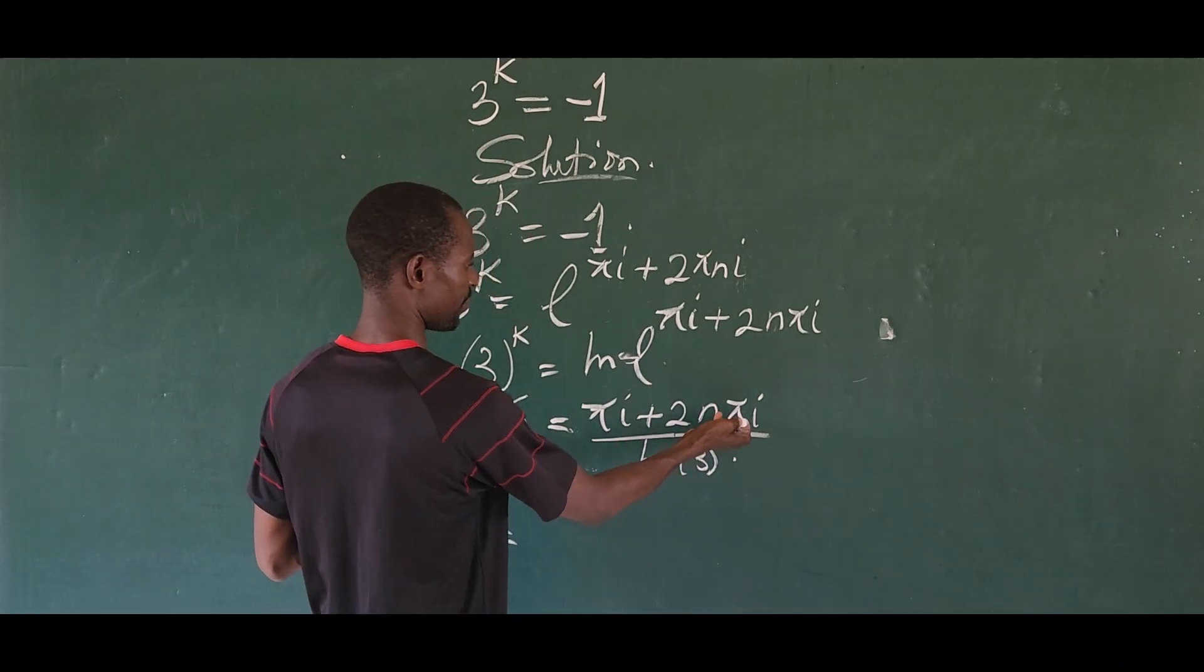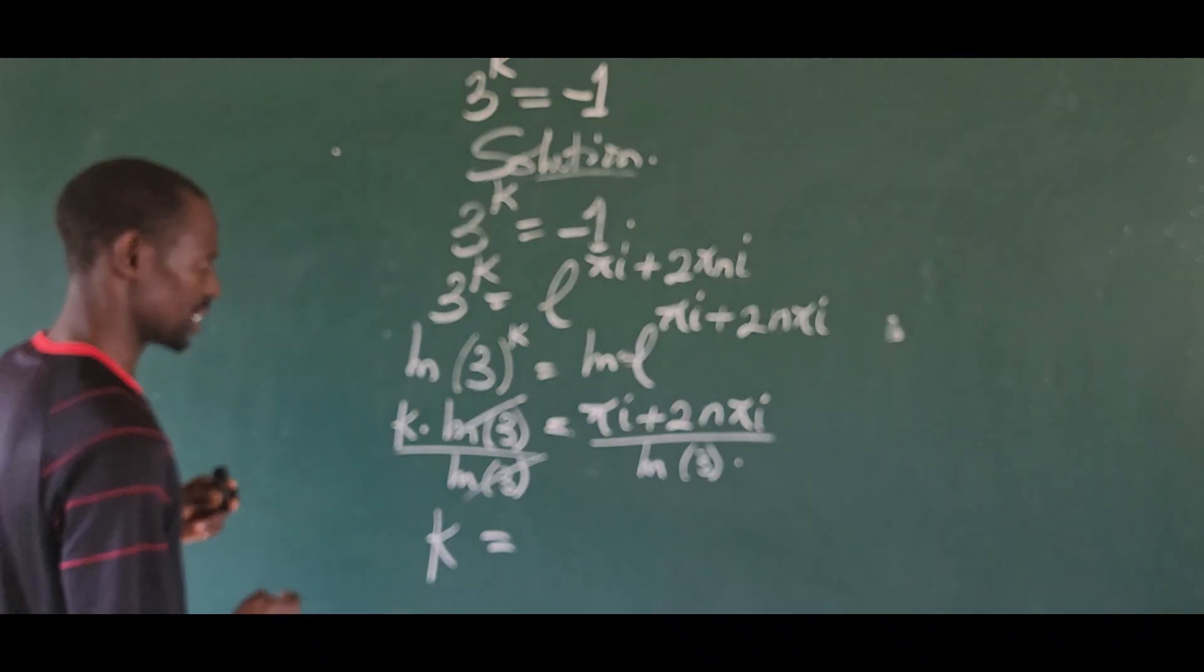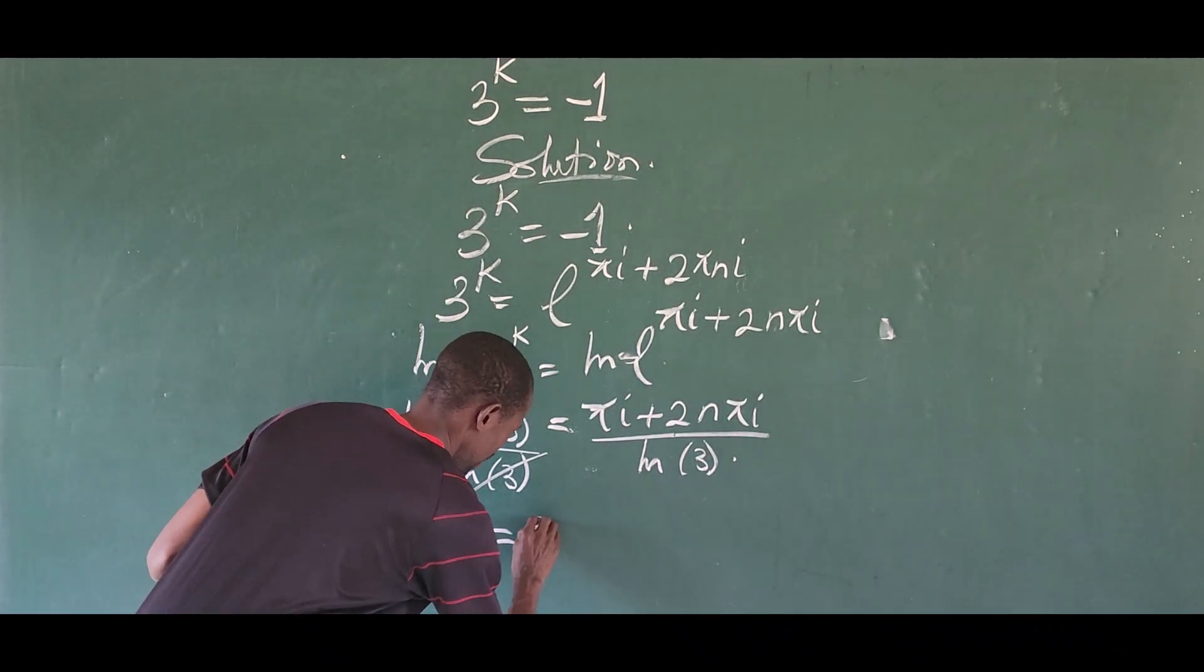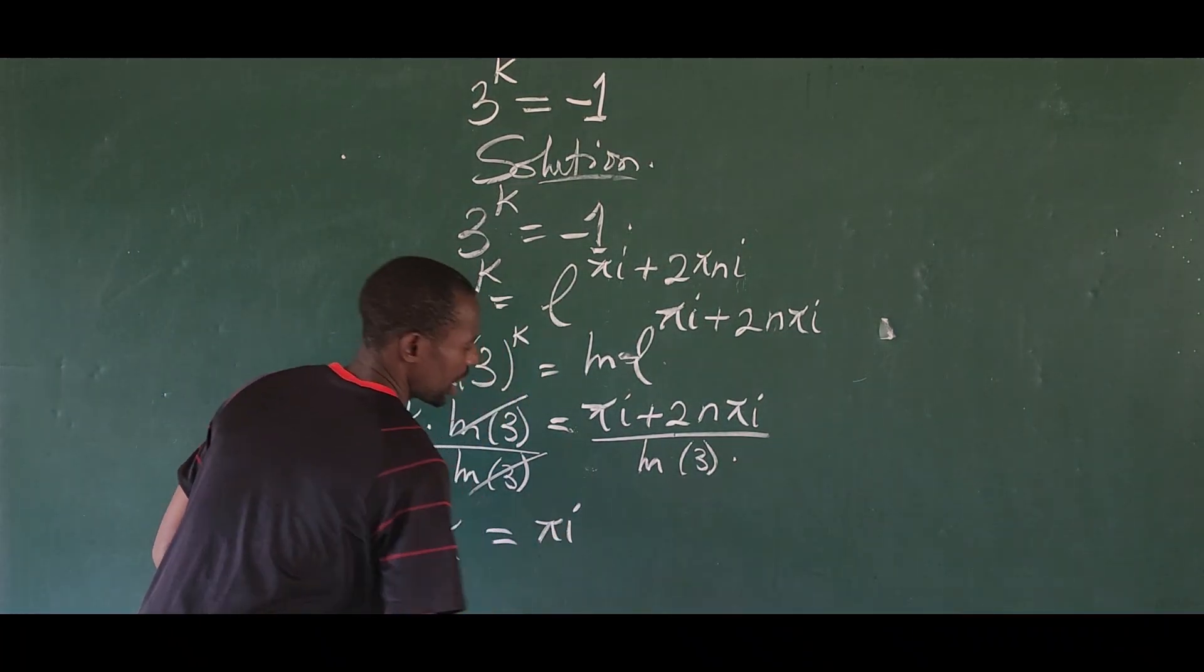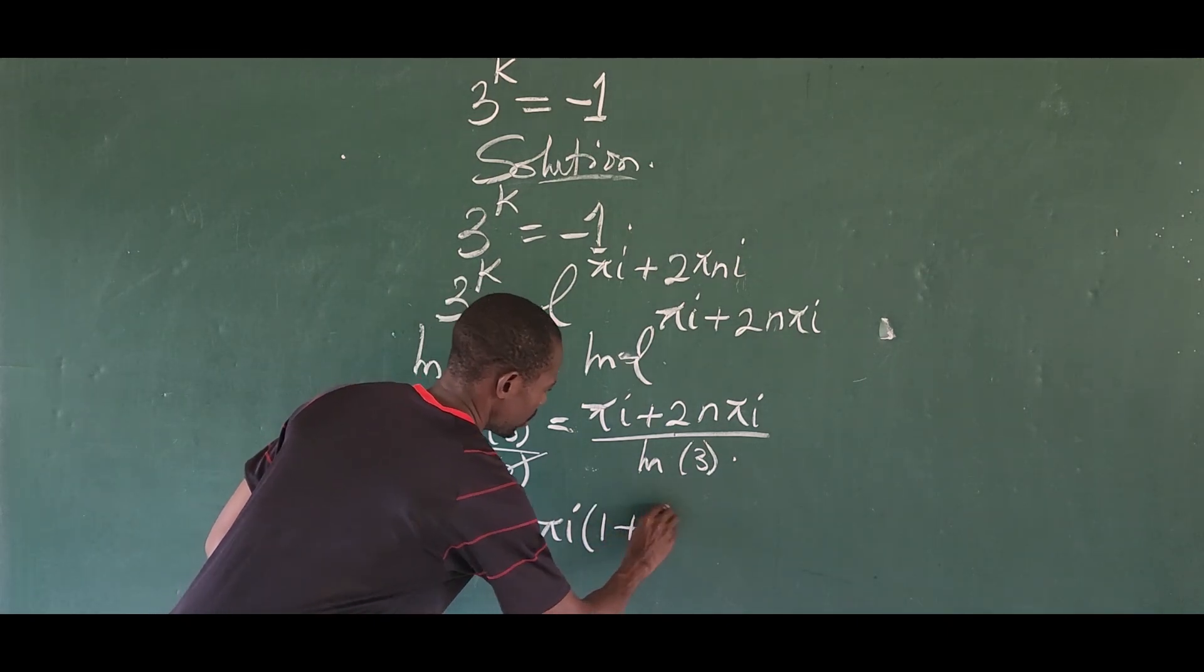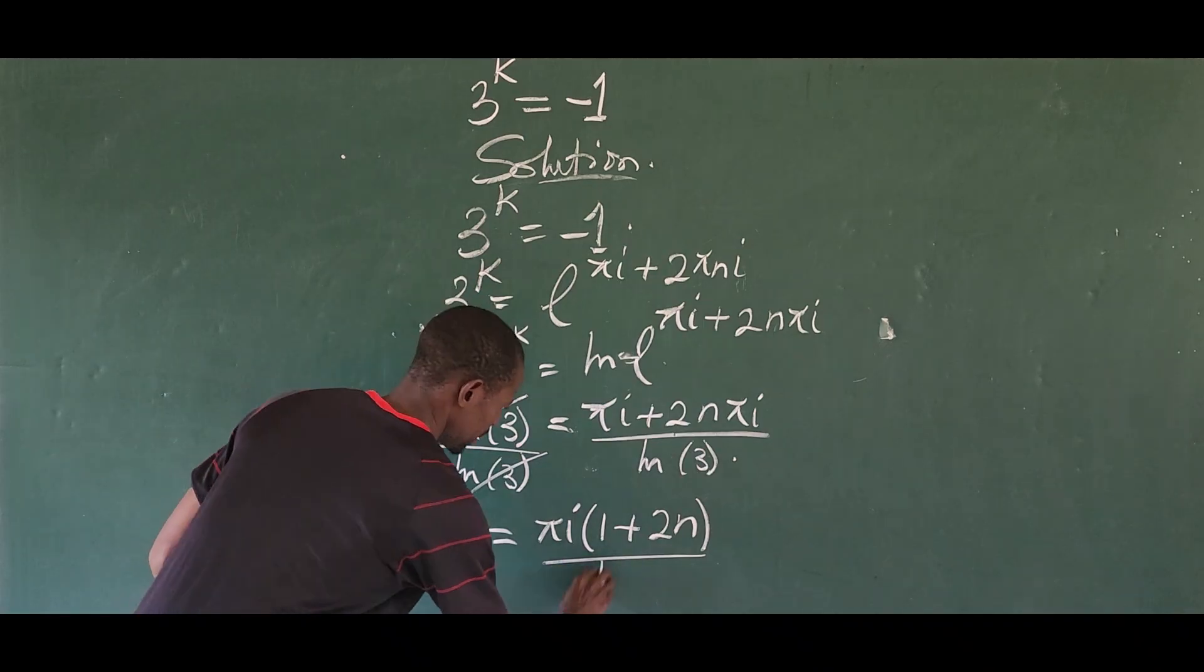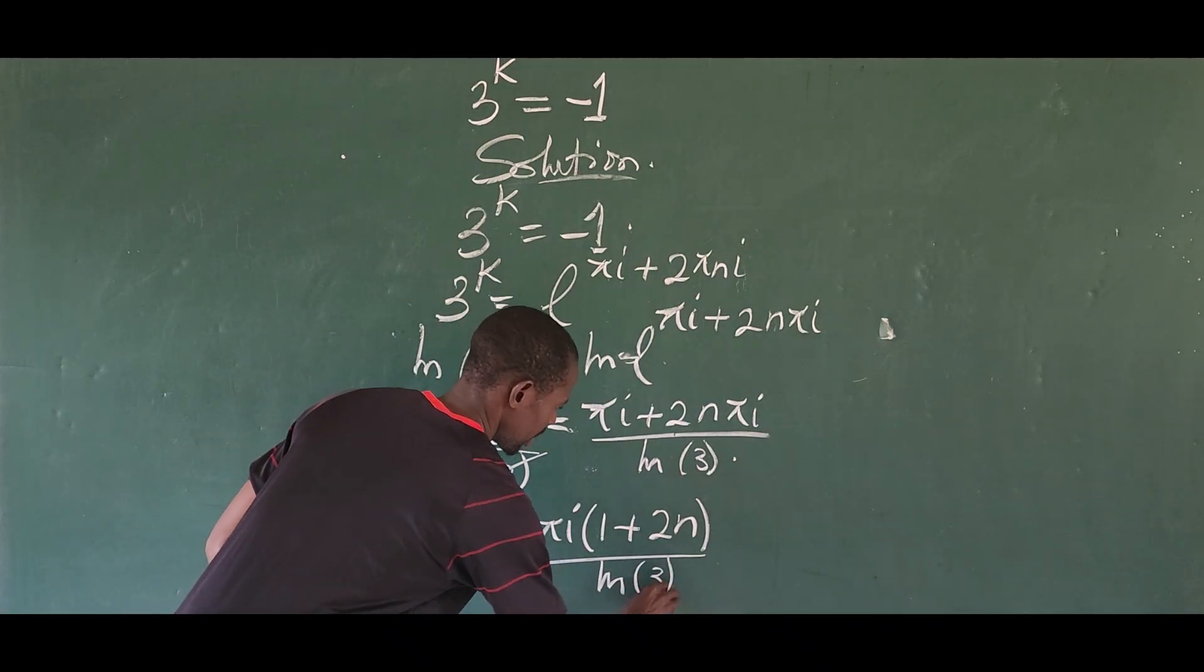What is common here? We have pi i. So we can factor that from the system. So if we do that, we're going to have here pi i into 1 plus 2n, all over the ln of 3.